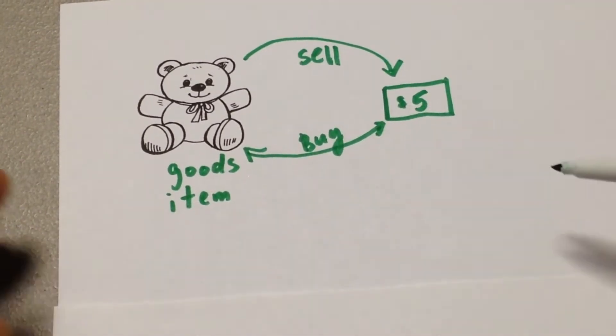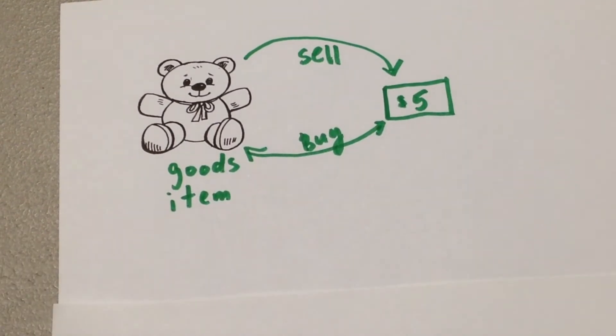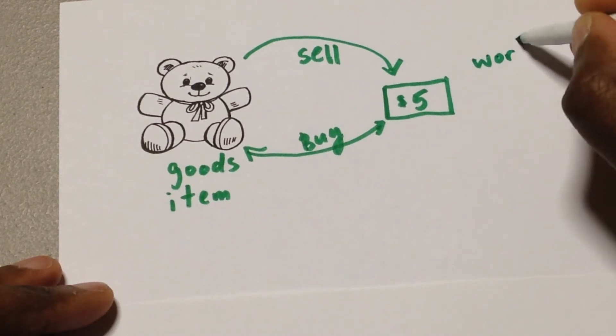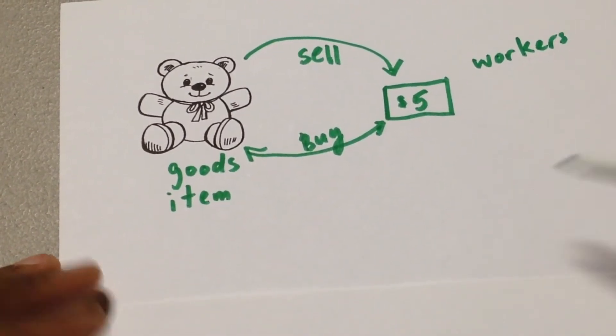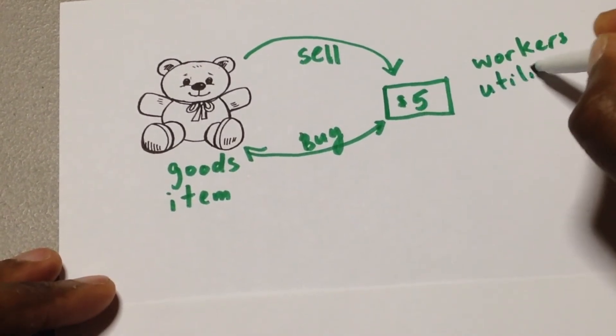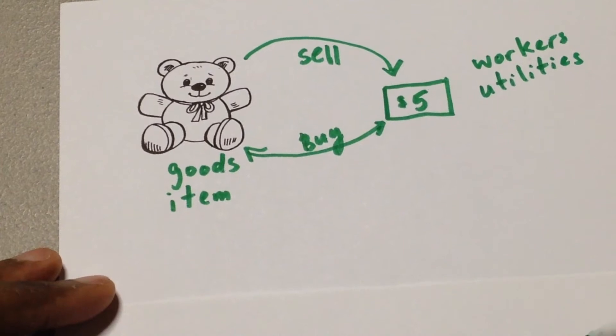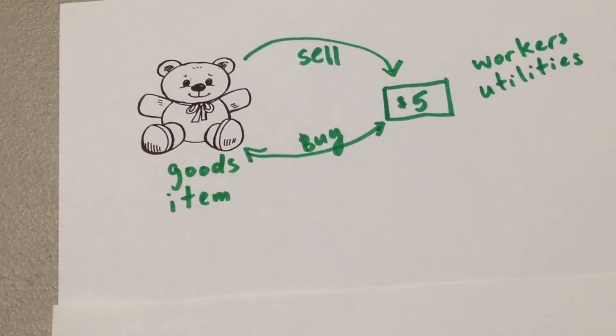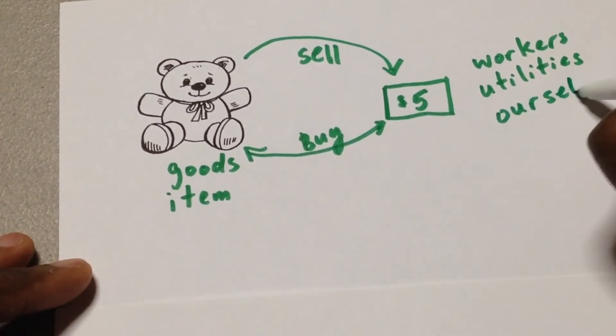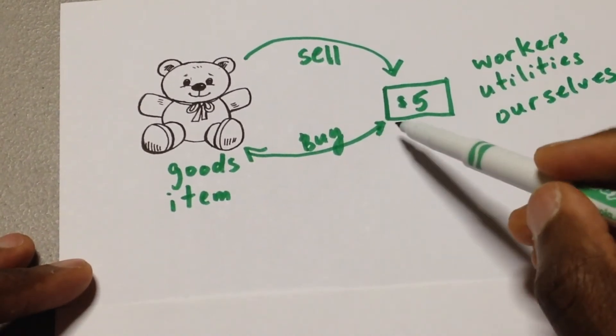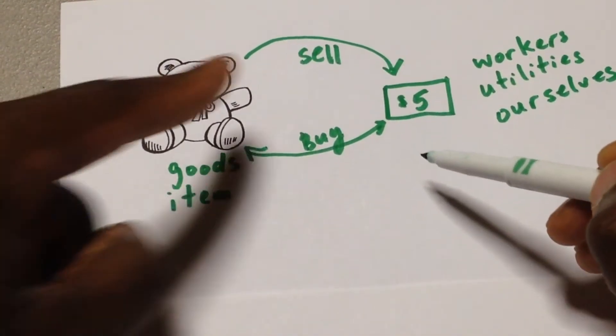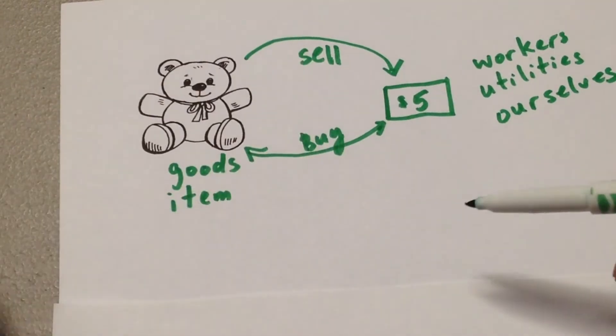Now the thing is, as we keep doing this, we have a store. So we have workers - you got to pay our workers. We have bills, we have utilities that we have to pay: light bills, telephone bills, gas, things like that. And we also have ourselves. We are the owners of the store, so we have to pay ourselves. Well, if we keep doing this system of just buying it and selling it for just the same amount, there's no extra money coming in. There's no extra income.